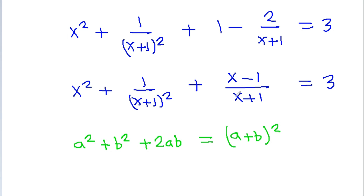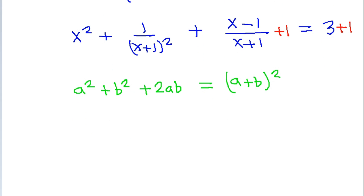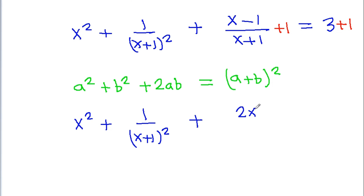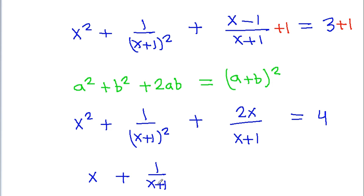So here if we add 1 to both sides, we can get x squared plus 1 by x plus 1 whole squared plus 2x by x plus 1 will be equal to 3 plus 1, which is 4. And now we can get x plus 1 by x plus 1.